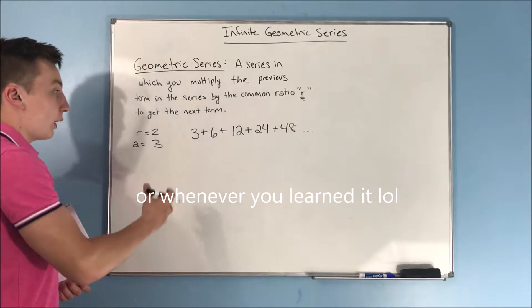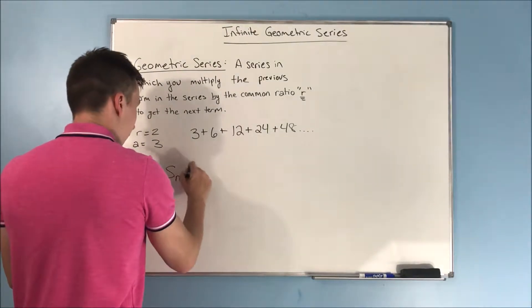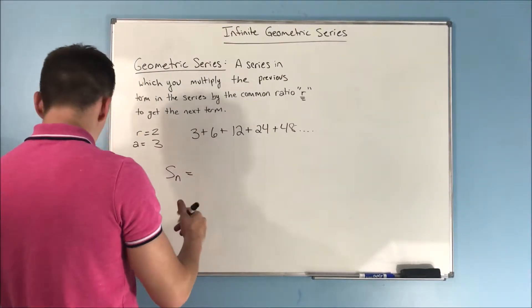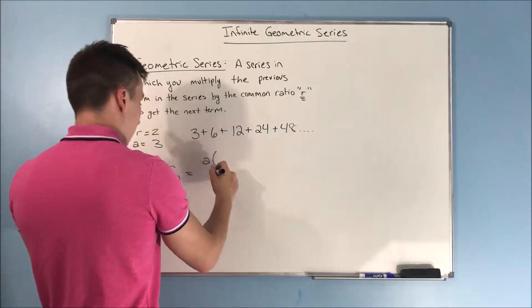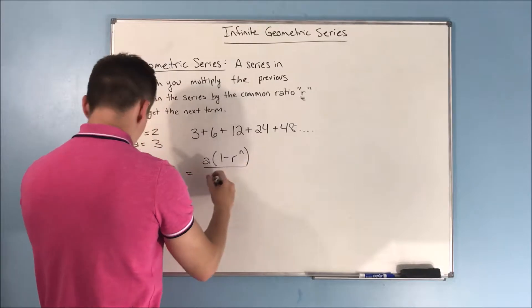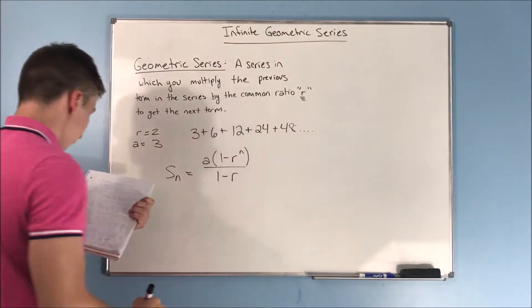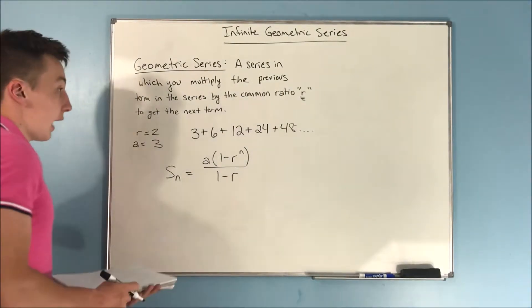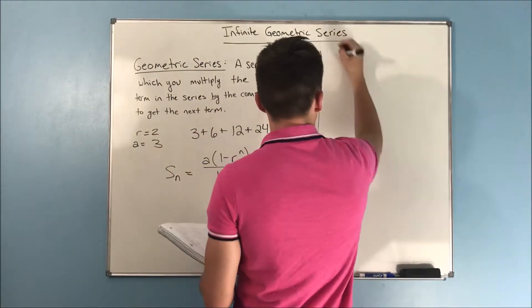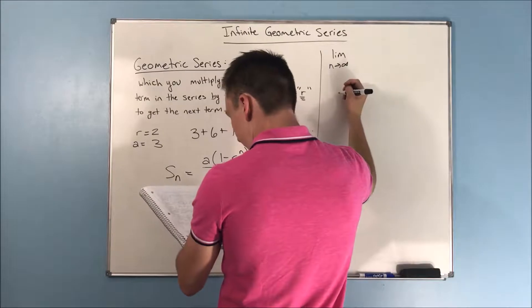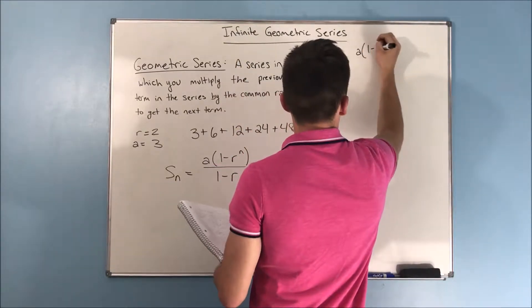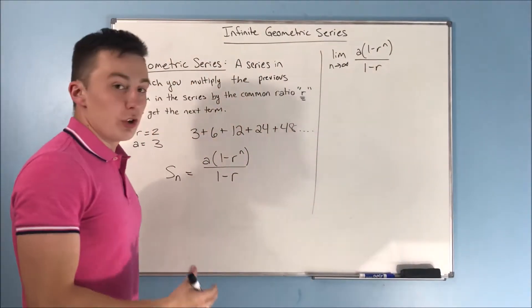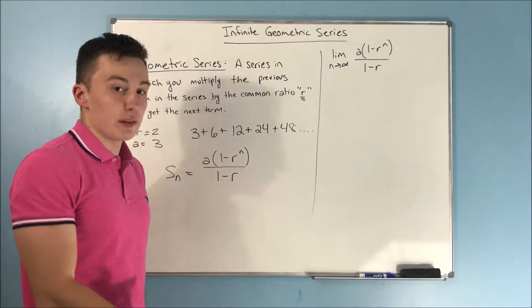In high school we found the sum of a geometric series with finite terms, and that sum was a times (1 minus r^n) over (1 minus r). Now if we have an infinite series, we can take the limit as n approaches infinity of a times (1 minus r^n) over (1 minus r) to see where the series is convergent or divergent.